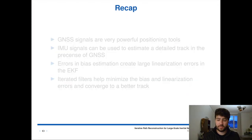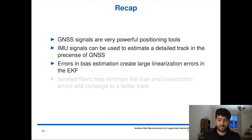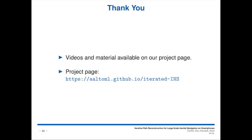To recap: GNSS signals are very powerful tools for positioning — pretty accurate and usually more than enough to create a very accurate track, but they suffer from gaps in indoor spaces and underground. IMUs can be used to estimate a detailed track and fill in the gaps, but errors in estimation and linearization create large errors in an EKF. Iterative filters can help mitigate this and extend the size of the gap of satellite measurements that can be fixed using the IMU. Thank you very much for your attention. You can find our materials on our project page, and any questions can be sent to me via email.